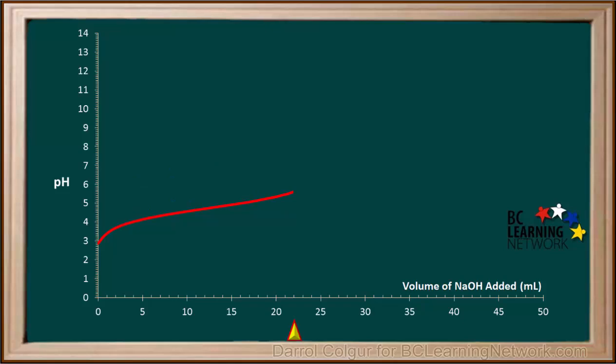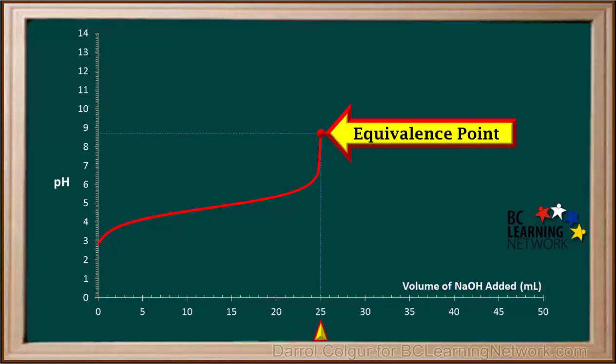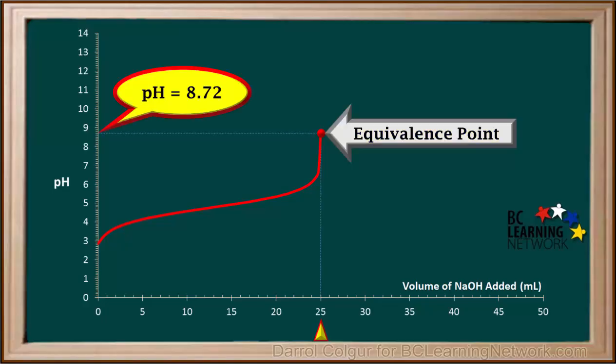When we add more NaOH, the buffer is overcome and the pH rises quickly. When we've added 25 mL of 0.1 molar NaOH to 25 mL of 0.1 molar CH3COOH, the moles of NaOH equals the moles of CH3COOH, so we've reached the equivalence point of this titration. The pH at the equivalence point of this titration is 8.72.